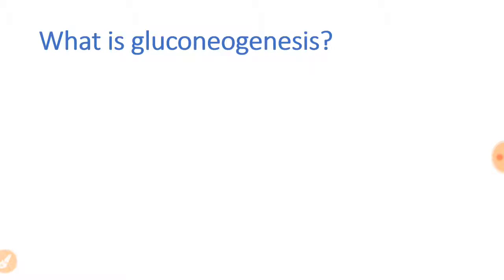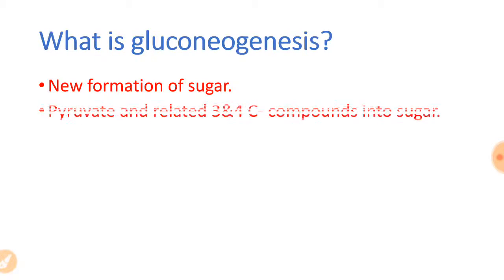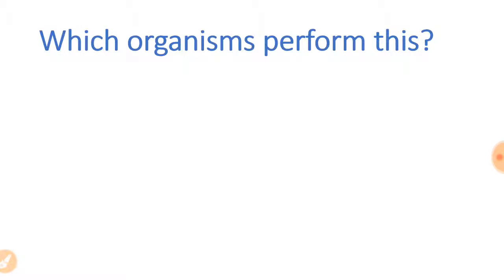Now we address what gluconeogenesis is. Splitting the term: 'gluco' means sugar, 'neo' means new, 'genesis' means formation — so it is the new formation of sugar. Glucose is formed from pyruvate and related three- or four-carbon compounds, which are converted into glucose.